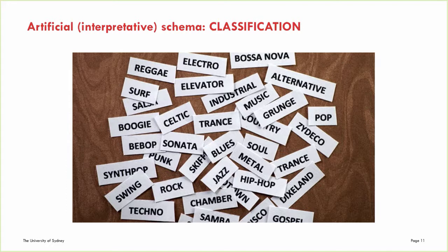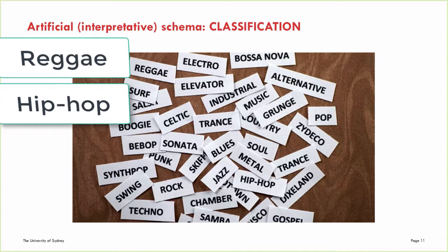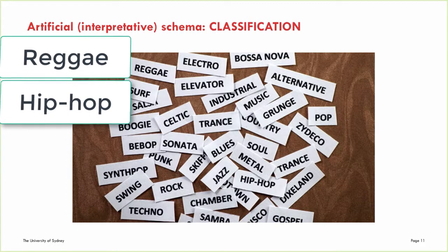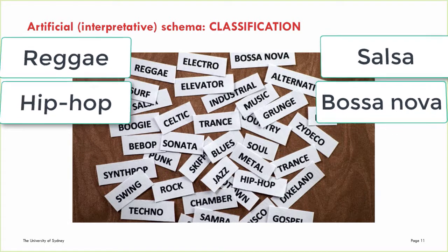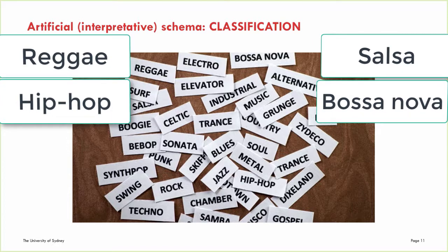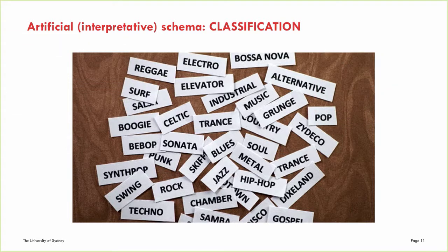A more refined classification would put similar types together. For example, reggae and hip-hop might go into one category, salsa and bossa nova into another, and so on. Notice how different people could look at these types and come up with different classifications based on different criteria. This is why classification is considered to be artificial or interpretive.